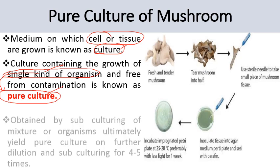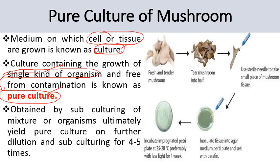Pure culture is obtained by subculturing a mixture of organisms, which ultimately yields pure culture on further dilution and subculturing for four to five times.